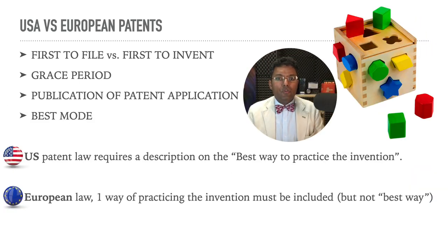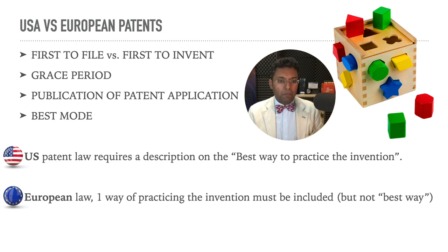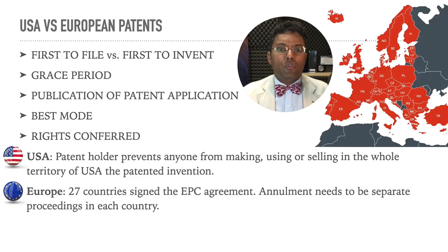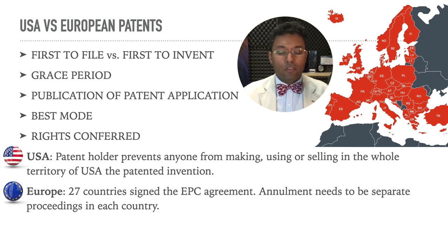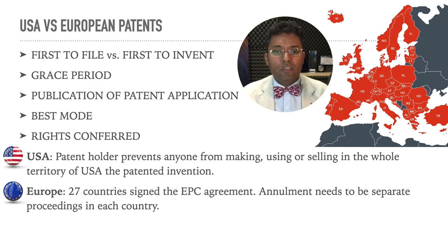In the US, you have a requirement to describe the best way to practice the invention. While in Europe, you are required to have one way of using or practicing the invention, but it is not required for it to be the best way at that time. In the US, when you submit a patent, it covers all of the US states. In Europe, it covers 27 countries, those who have signed the EPC agreement. But if your patent needs to be annulled, you need to do that in each and every country in Europe, while in the US, you do it once and it covers all the states.